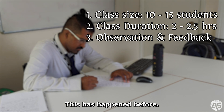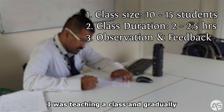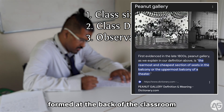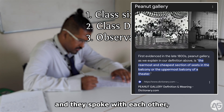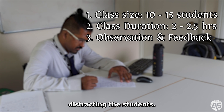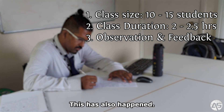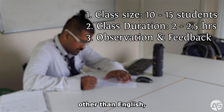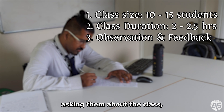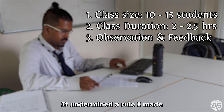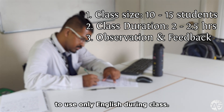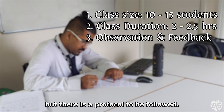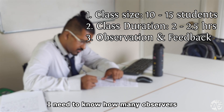Three: if any teachers wish to observe my class, I need to know before I plan the lesson. This has happened before — I was teaching a class and gradually teachers came in and a peanut gallery formed at the back of the classroom and they spoke with each other, distracting the students. It has also happened that a teacher came in and started talking to the students in a language other than English, asking them about the class during the class, which undermined a rule I made to use only English during class.